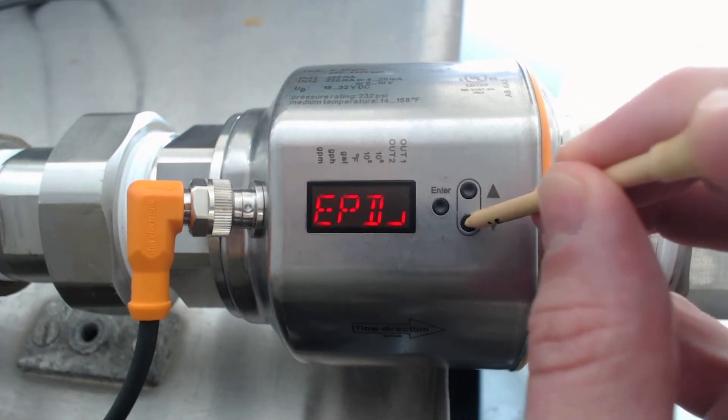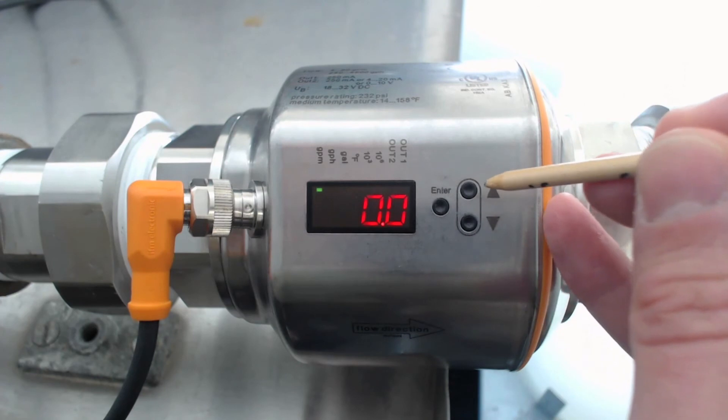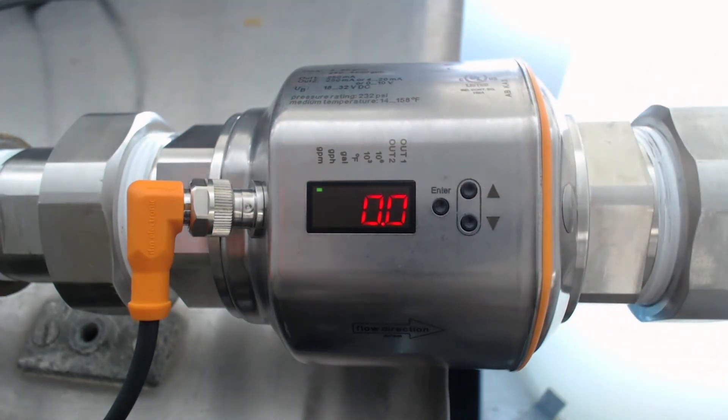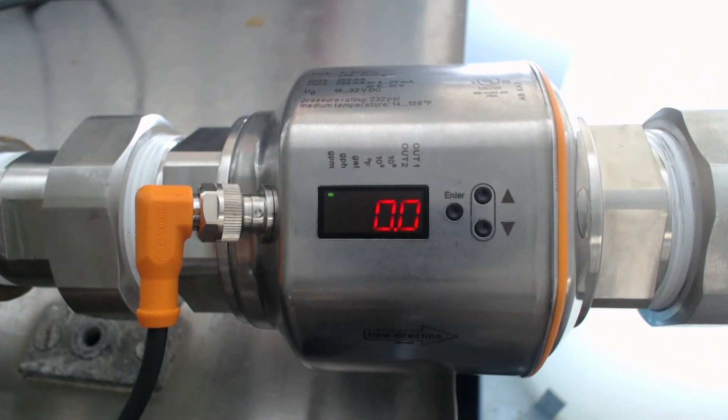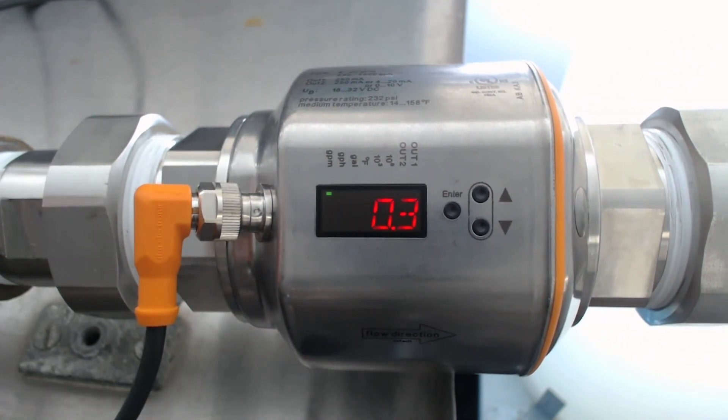The magmeter is now set up to give a pulsed output. In this example, our magmeter is hooked up to a pump, so we'll turn it on. You'll see that the flow will stabilize at around 5 gallons per minute.